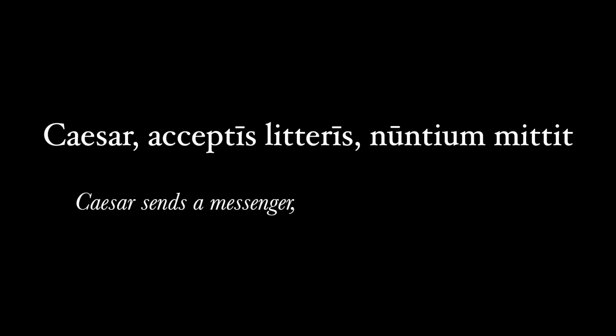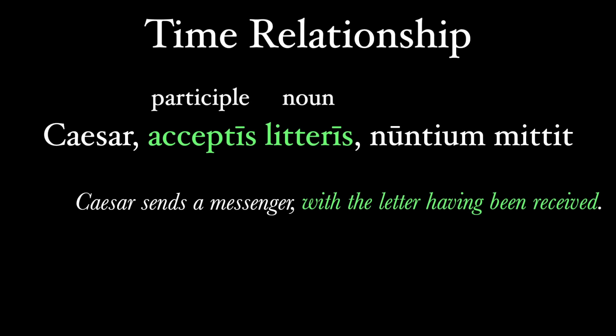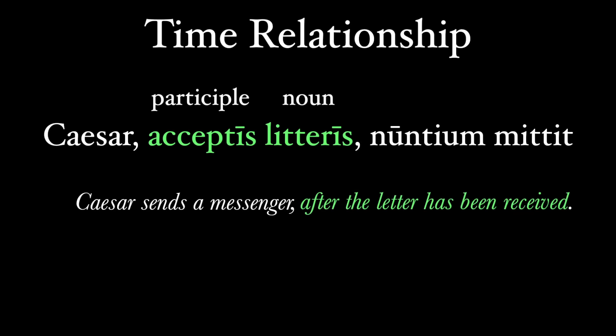Let me illustrate. Caesar sends the messenger — and here's the ablative absolute — with the letter having been received. 'Acceptis literis' is the ablative absolute because it's a noun, 'literis,' and a participle, 'acceptis,' in the ablative case, and here it shows a time relationship with the main clause: he sends the messenger after the letter has been received. We don't have to translate it so literally; it's perfectly fine to say 'after the letter has been received' or 'when the letter was received.' I like to keep passive Latin participles passive in English, since without greater context we can't say whether it was Caesar or someone like Vercingetorix who received the letter.